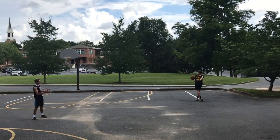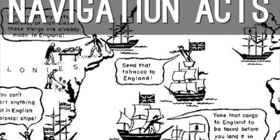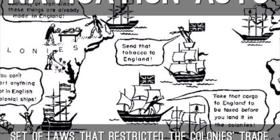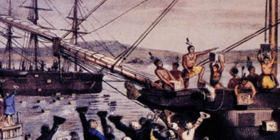In 1651, the Navigation Acts were passed, in which North American trade was restricted, only allowing them to trade with England, severely limiting any growth opportunities and any opportunity at globalization for the colonies. In basketball, this represents a block or a pack.